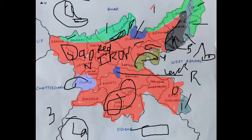Sandy soil has less humus and is therefore less fertile. They have high iron content, and this area in particular has very high iron content.